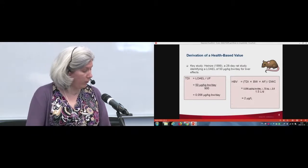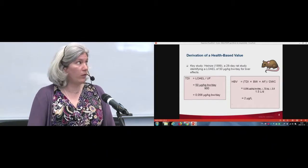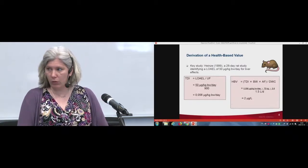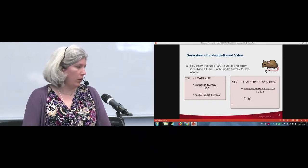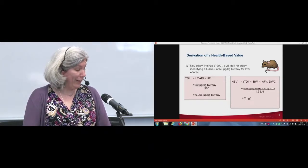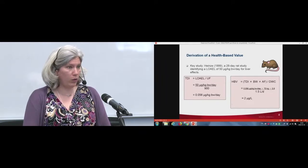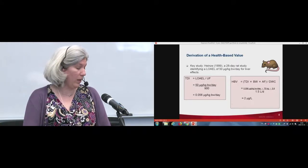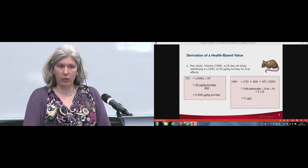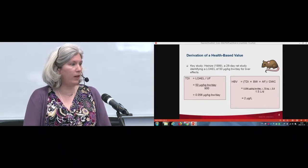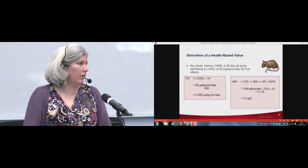You can see the math — it's fairly straightforward. The uncertainty factors (UF) is where we differ a little from some of our partners with the US EPA or the World Health Organization in making decisions around what uncertainty factors to use. There's an uncertainty factor of 900: times 10 for intraspecies variability, times 10 for intraspecies variability, times 3 for database deficiencies, and times 3 for the use of a lowest observed adverse effects level instead of a no observed adverse effects level, which is our preference.